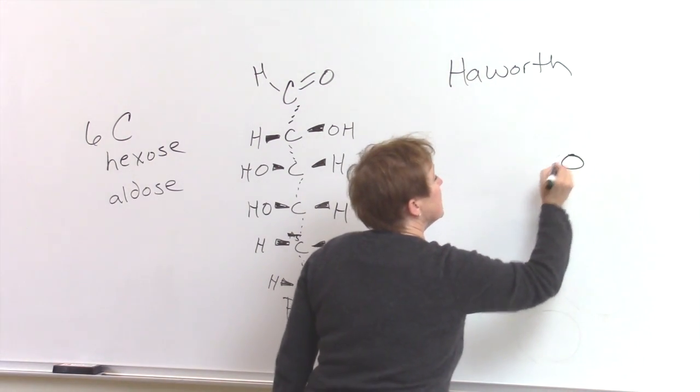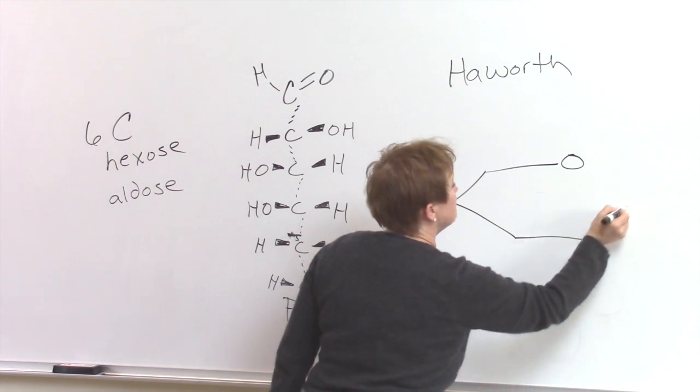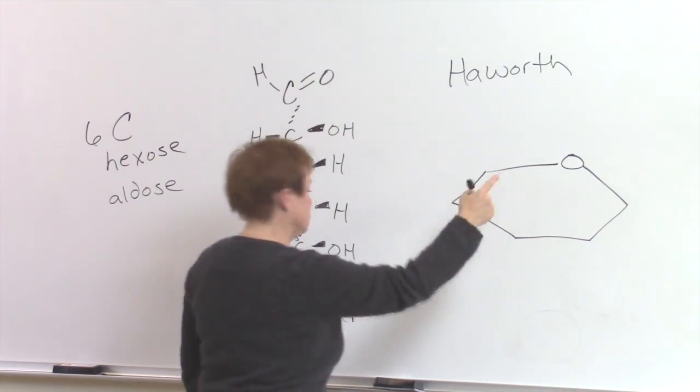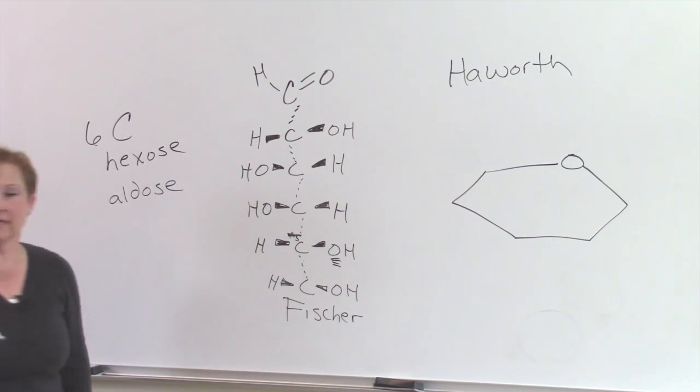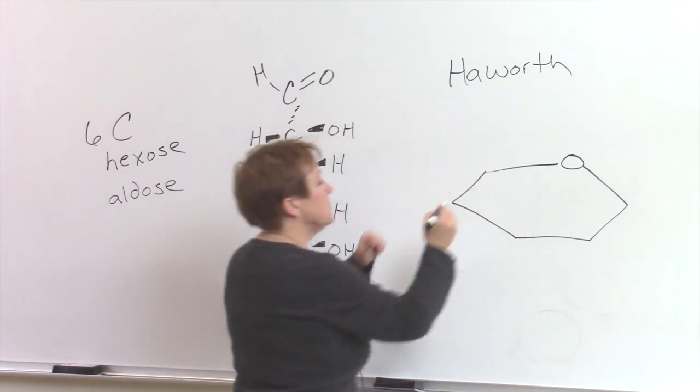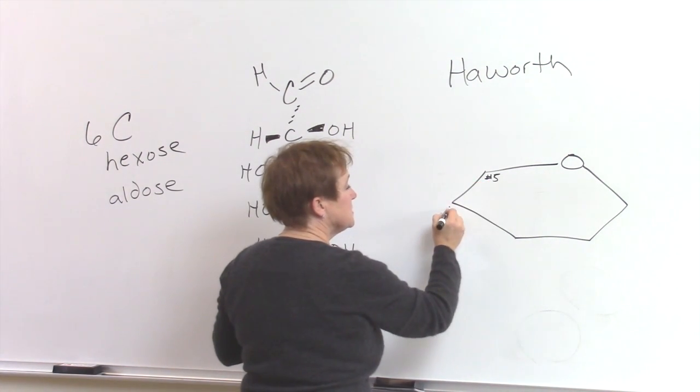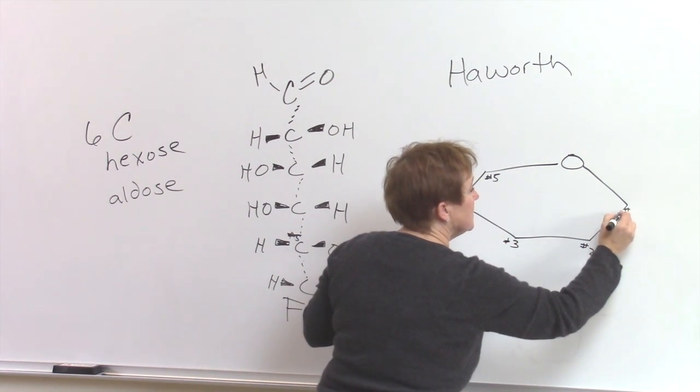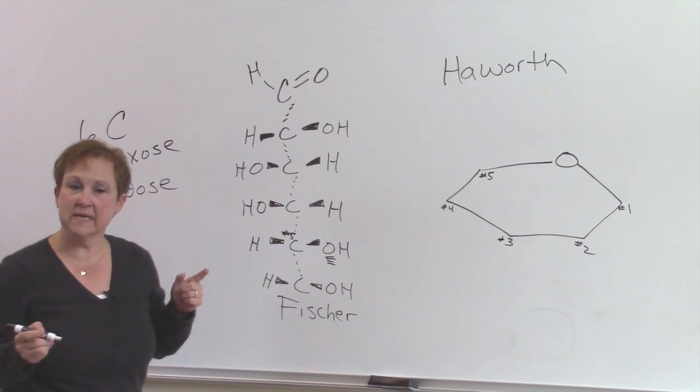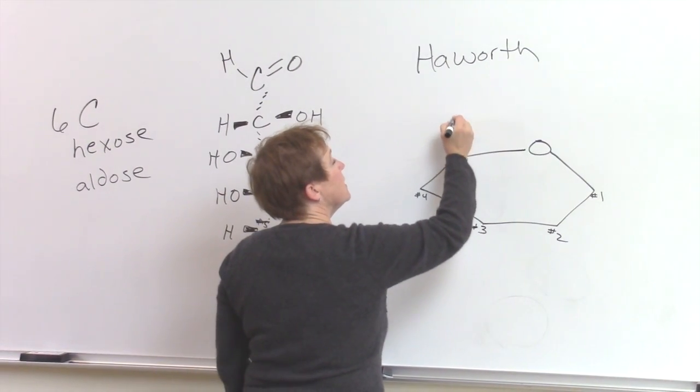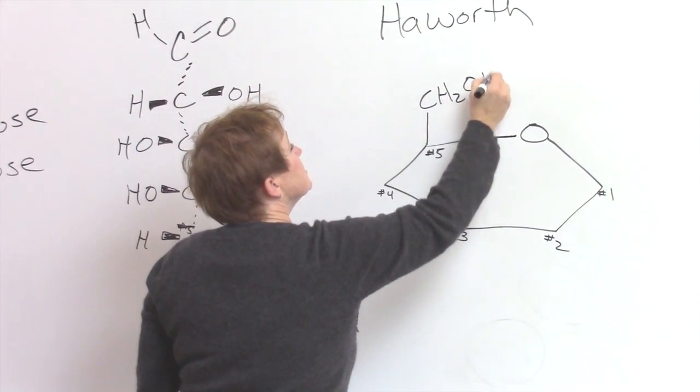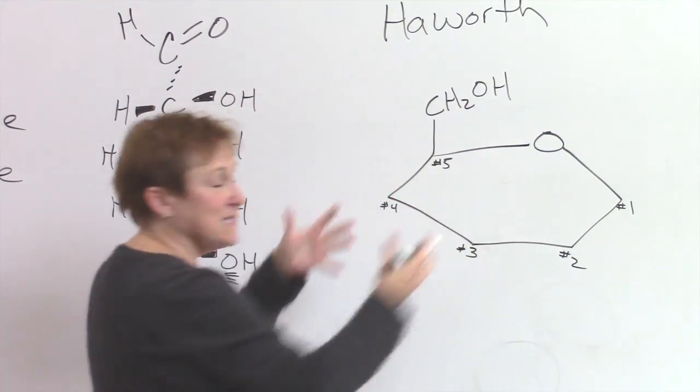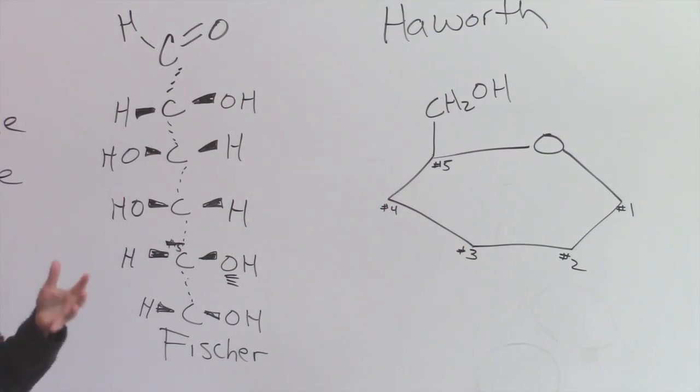Your Haworth projection is going to be a six-membered ring but one of the things in the ring is going to be an oxygen. Carbon number five is right here, number four, three, two, and one. Carbon number six we typically write going up, CH2OH, so it remains unchanged, sticking out. It's not in the ring because a seven-membered ring is less stable.